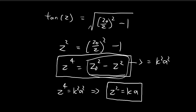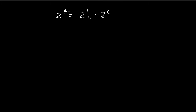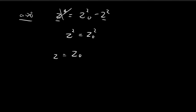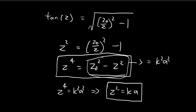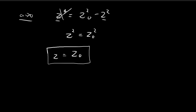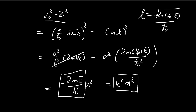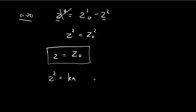We also note that since Z⁴ = Z0² − Z², and the higher-order Z⁴ term is insignificant as A → 0, we have Z² → Z0², so Z → Z0 as A → 0. Combining with Z² = K·A, we get Z0² = K·A in the limit A → 0. This is the key expression we are after.